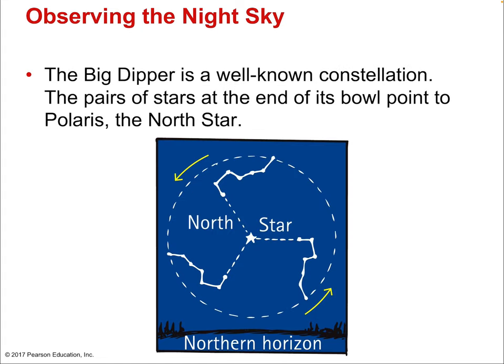Returning to the Big Dipper — it's a well-known constellation. The pair of stars at the end of its bowl point to Polaris, the North Star, which is very useful in the Northern Hemisphere. The angle up to the North Star from any location equals your northern latitude. Here in North America, that would be around 38 degrees. The altitude in degrees to the North Star always equals your northern latitude exactly.